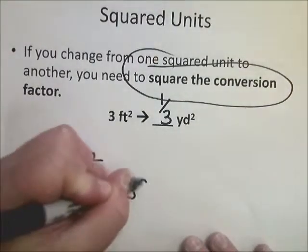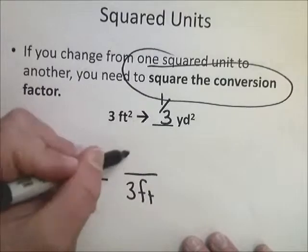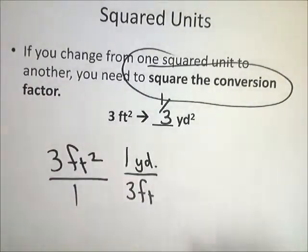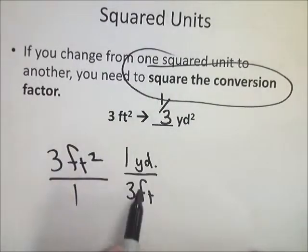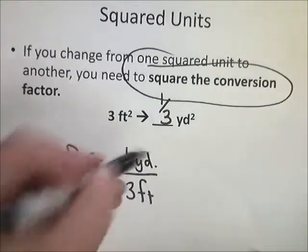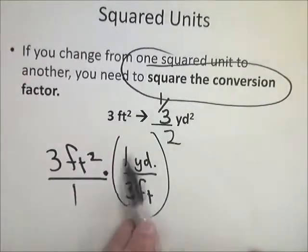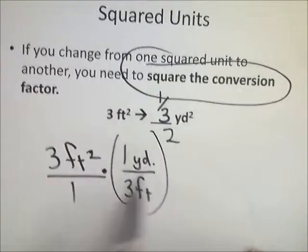Feet need to be on the bottom, so 3 feet for 1 yard. However, this is feet squared, but this is just feet, so I need to square this entire term, which is really simple. You just do 1 squared is 1, and 3 squared is 9.